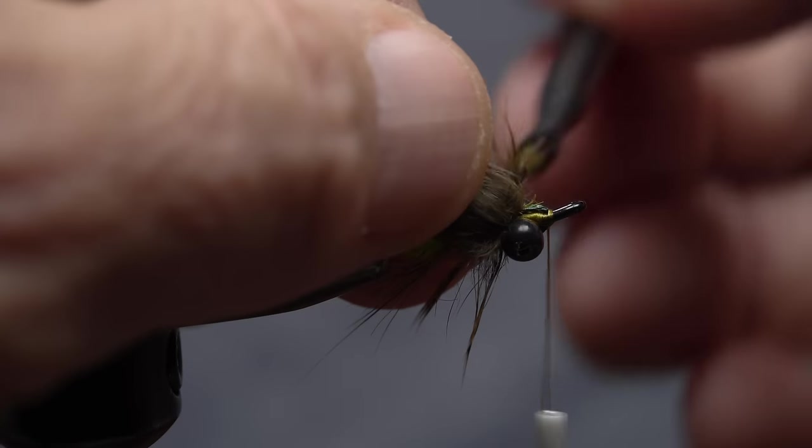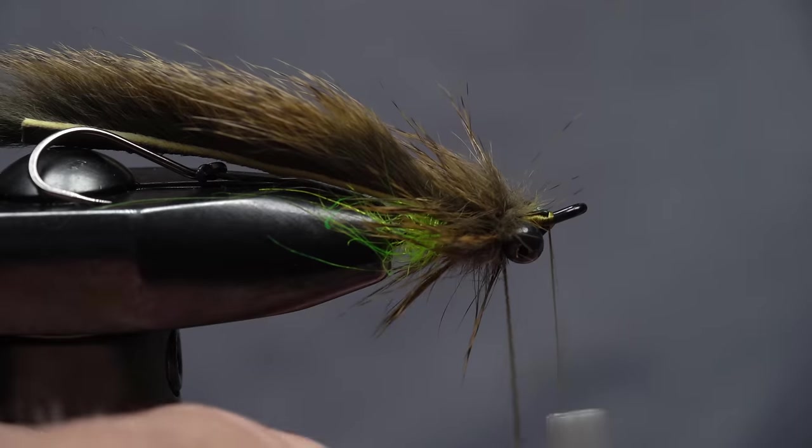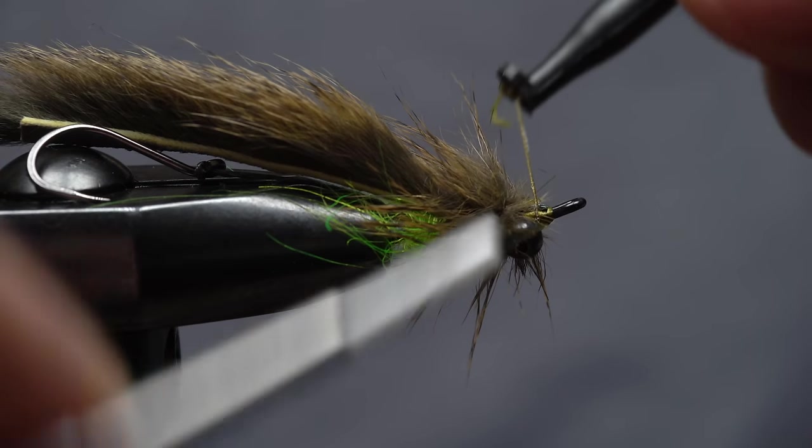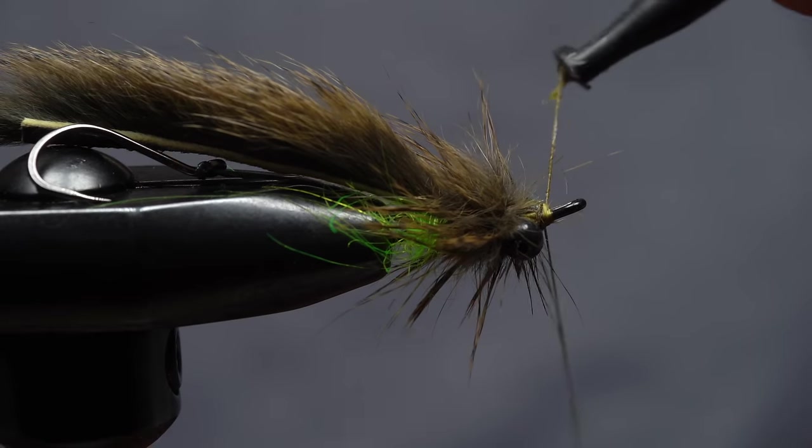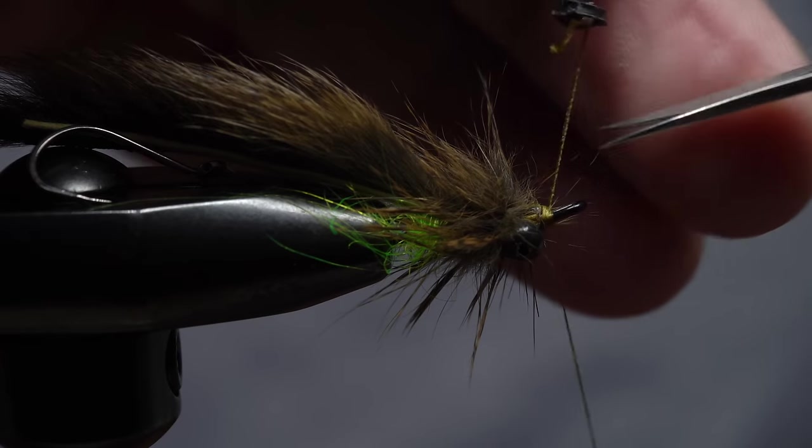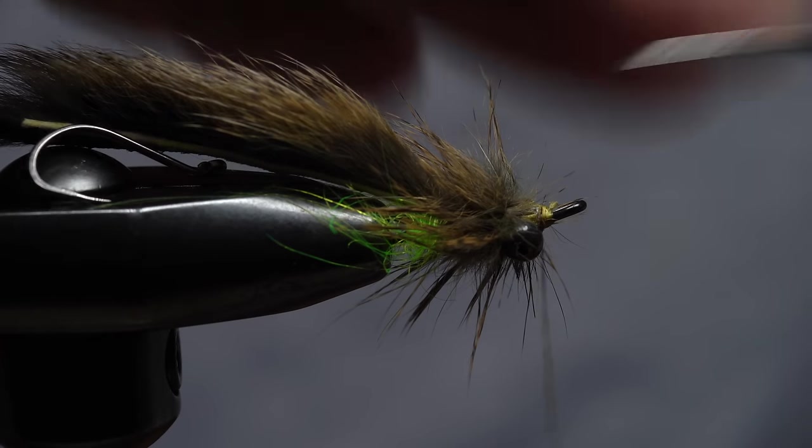When you reach the back edge of the dumbbell eyes, go under the shank and pull the bare thread up behind the eye and take several nice tight wraps of tying thread to secure it. Once secured, you can snip the excess off close.